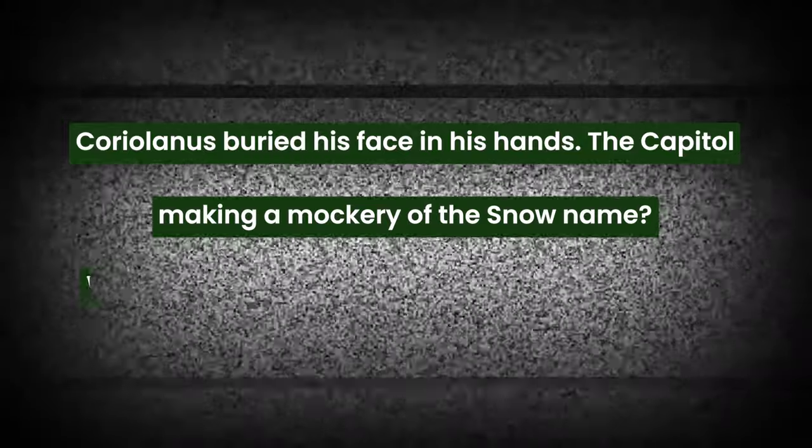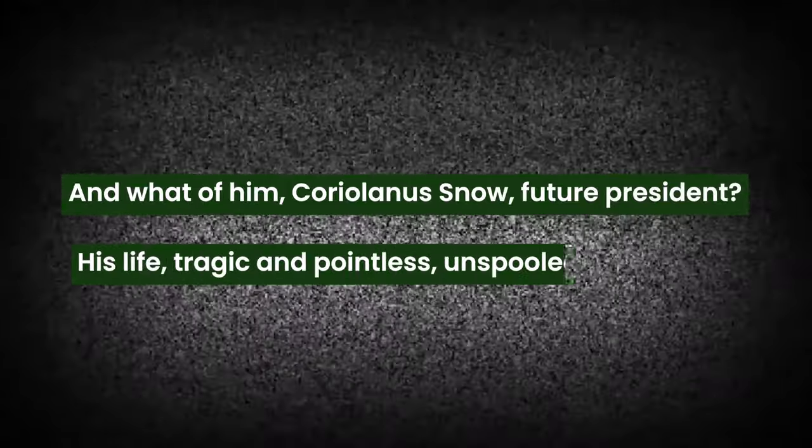He takes a dark turn in the final part when he doesn't get what he thought he deserved and is instead sent to District 12 as a peacekeeper. 'Coriolanus buried his face in his hands — the Capitol making a mockery of the Snow name? Was this the fate of the magnificent Snow family? And what of him, Coriolanus Snow, future president of Panem? His life, tragic and pointless, unspooled before him.' This man is so dramatic for no reason. It's here that Coriolanus grows tired of being Sejanus' keeper, feeling threatened by his refusal to excel on behalf of the Capitol. This ultimately fuels his decision to turn in Sejanus to Dr. Gall, leading to Sejanus' execution. Along with that final scene with Lucy Gray, this is where we see him truly step into the persona of President Snow.